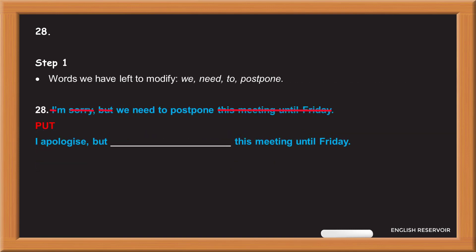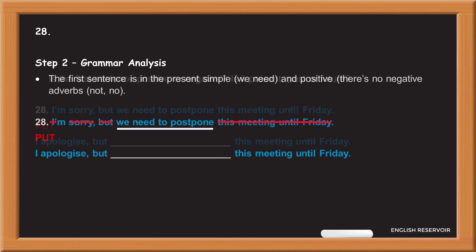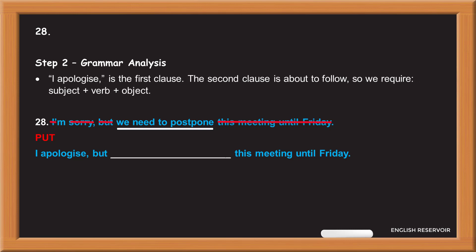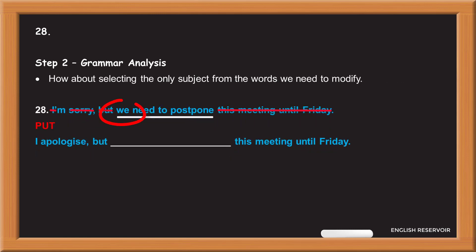The words we have left to modify are: we need to postpone. Step 2 grammar analysis: is the first sentence positive or negative? Is it present, past, or future? The first sentence is in the present simple — 'we need' — and positive. There are no negative adverbs like 'not' or 'no'. 'I apologize' is the first clause; the second clause is about to follow. So we require subject plus verb plus object. Select the only subject from the words we need to modify.